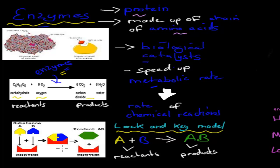How enzymes actually work in detail: we have something called substrates — what we start with. In the earlier case, it was carbohydrates and oxygen. They come together and lock onto an enzyme, and the enzyme makes whatever is meant to happen occur a lot faster. In this case, two substrates are meant to combine to form a product — the final thing. Here, A and B come together to form one big block, and the enzyme just makes it happen faster. We call the beginning the substrate and the end the product.